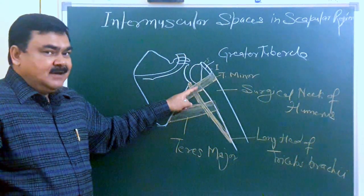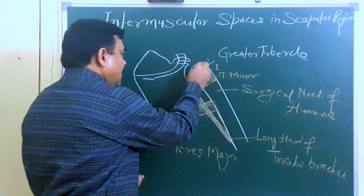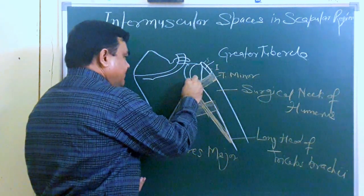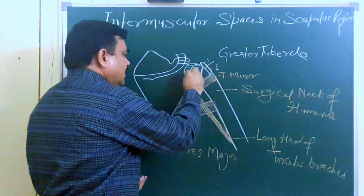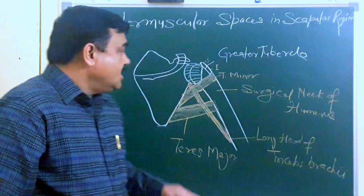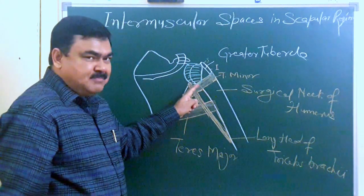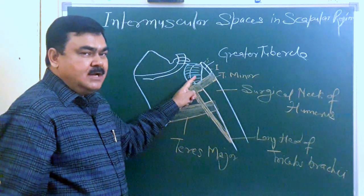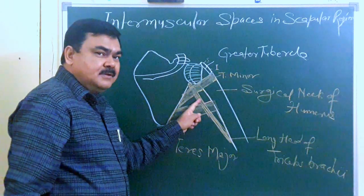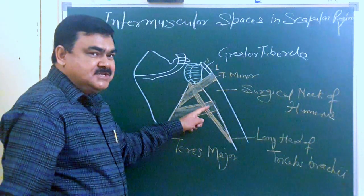Superiorly, the quadrangular space is bounded by teres minor posteriorly, then the capsule of the shoulder joint, and anteriorly the subscapularis muscle. So three structures form the superior boundary from posterior to anterior: teres minor, capsule of the shoulder joint, and subscapularis muscle. The medial boundary is formed by the long head of triceps, and the inferior boundary is formed by teres major.